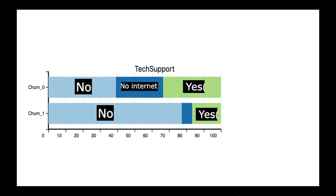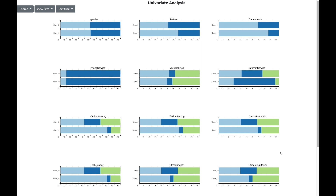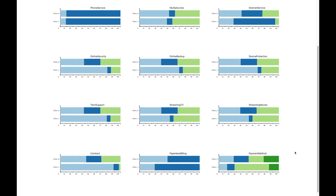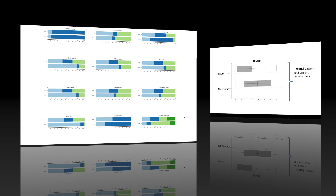Let us now take tech support. The pattern between the churners and non-churners is not similar. You can observe that customers who do not have tech support have a higher churn. So tech support is an important feature in determining churn. Here is an analysis of all the categorical variables, and this visualization can be useful in understanding which categorical features are impacting churn in a single visual.